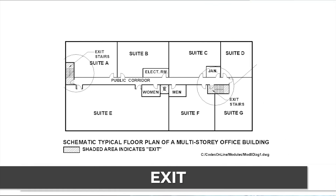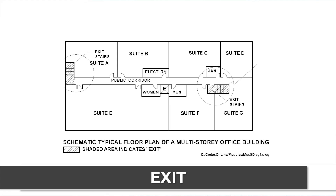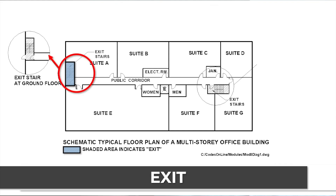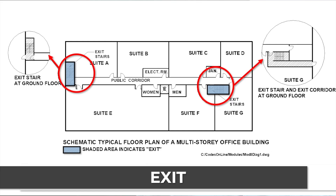I'm providing you a sketch that was created by someone else. This is a floor area — let's call it the second floor of some kind of space, not the ground level. You can see there's a public corridor, men's and women's washrooms, various suites, a janitor room, an electrical room, and then we have the exit stairways. One on the left-hand side takes you all the way down to the ground floor and outside to safety. Another exit stair on the right-hand side takes you down to an exit corridor, which then allows you to exit to safety.